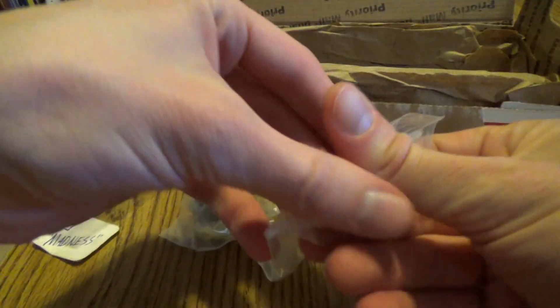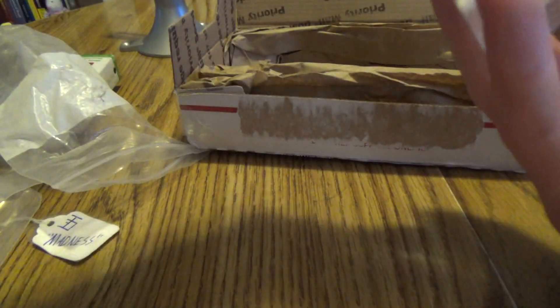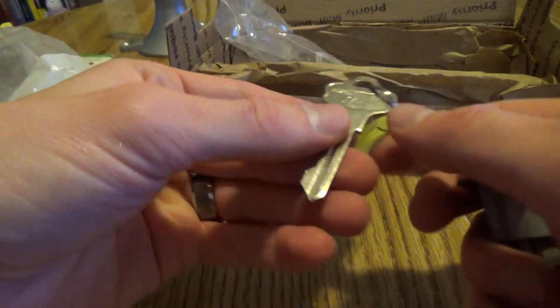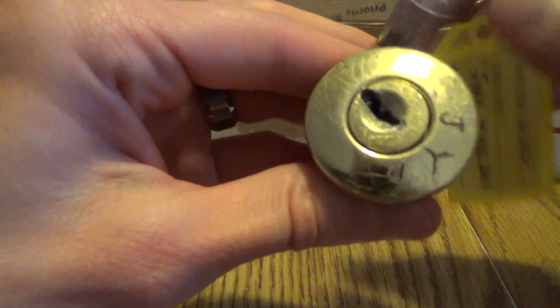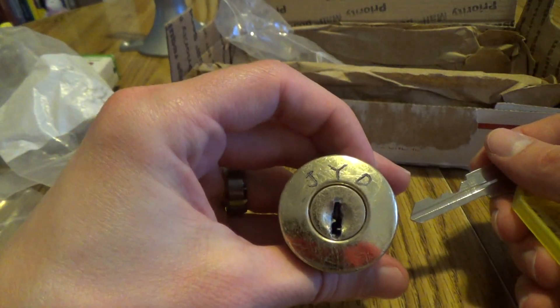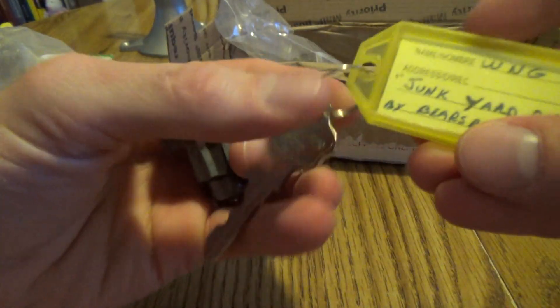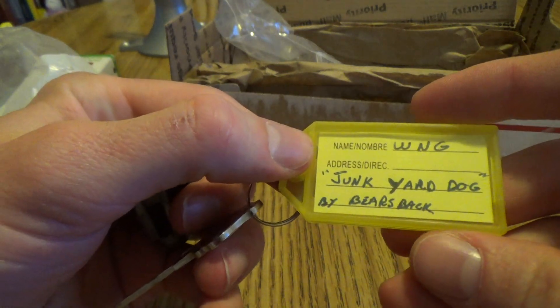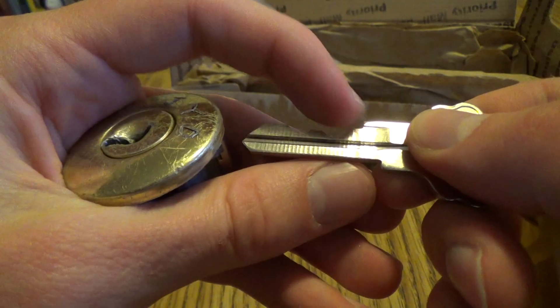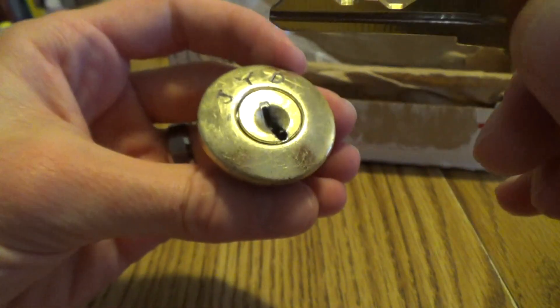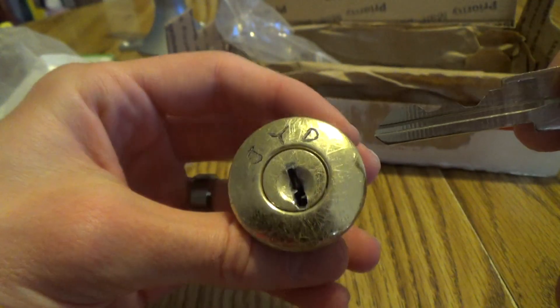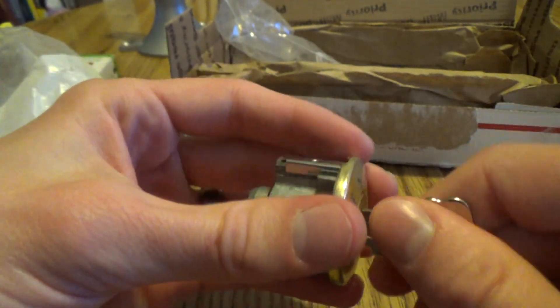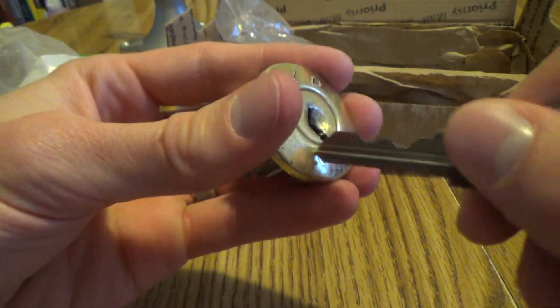And the last one. Let's see what we have. So it's an Elko Key, but it's a Kwikset Keyway. Junkyard Dog by Bear's Back. Some of these are actually really nice keys, even though they're pretty normal locks. That's a beautiful lock.